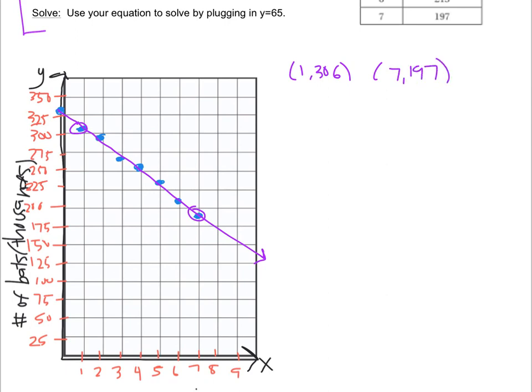I'm not going to write out all the formula work. I'm just going to do it, 306 minus 197 over 1 minus 7. So that gives me, let me get my calculator out. So 306 minus 197 is 109 divided by negative 6. It doesn't go in evenly, but I can kind of estimate it to be negative 18.2.